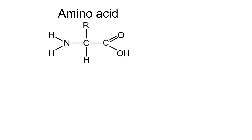Welcome to this video on the general properties of proteins. A protein is a polymer, which means it's made up of a long chain of monomers. The monomers in a protein are amino acids.